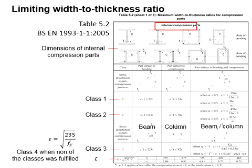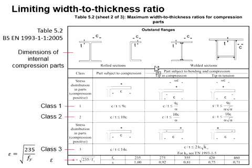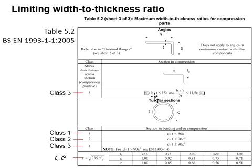Sheet 1 gives you the details for the internal compression part. Sheet 2 is for the outstanding flange, and sheet 3 is for the angle and tubular section.